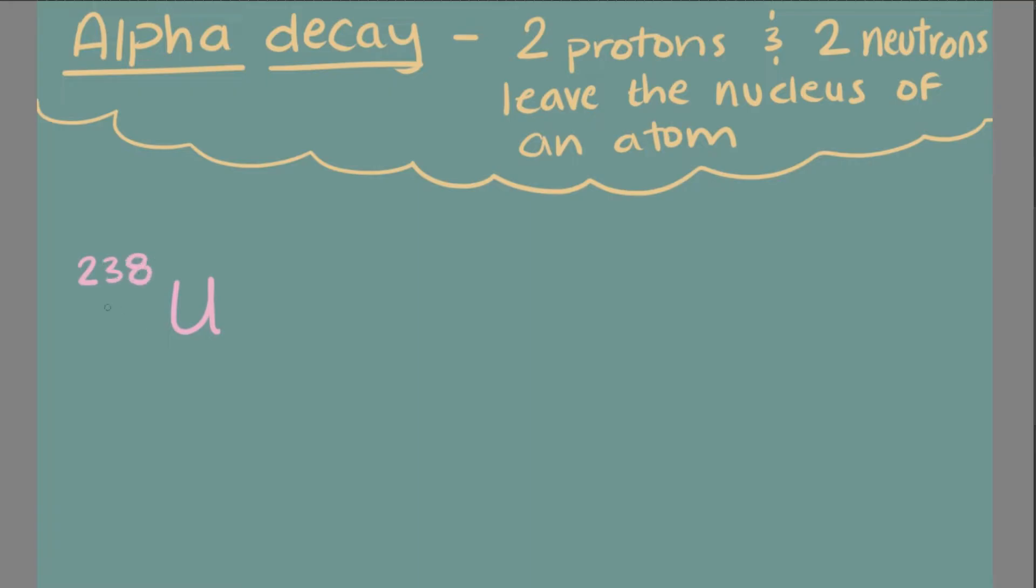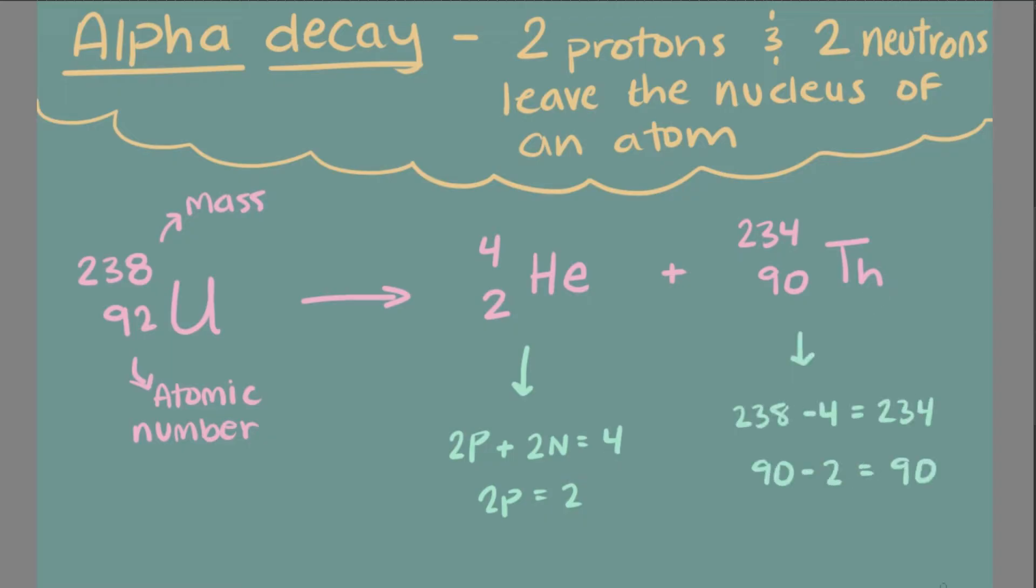For example, let's consider uranium. Uranium naturally has a mass of 238 and an atomic number of 92. When uranium goes through alpha decay, it will lose two protons and two neutrons. Therefore, its mass will decrease by four and its atomic number will decrease by two, making it an isotope of thorium.